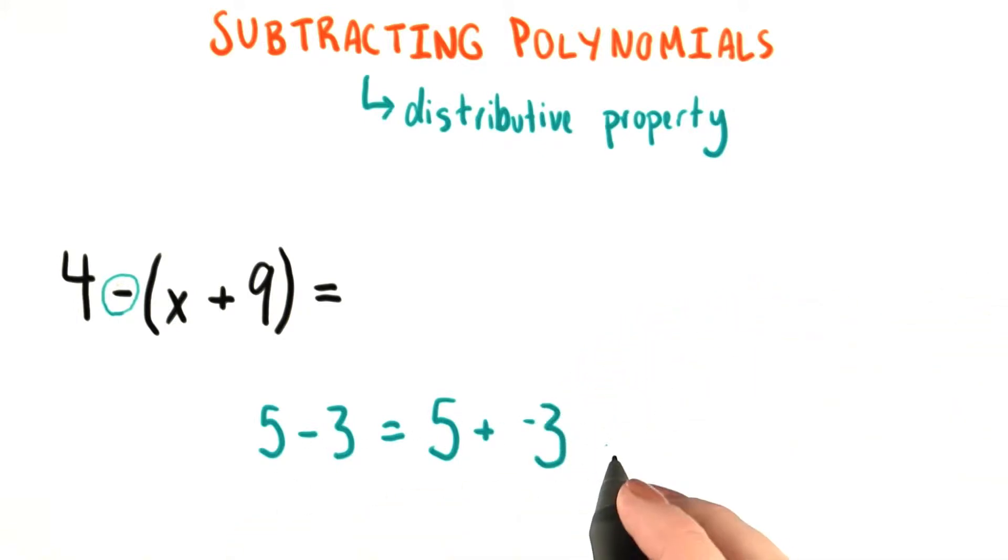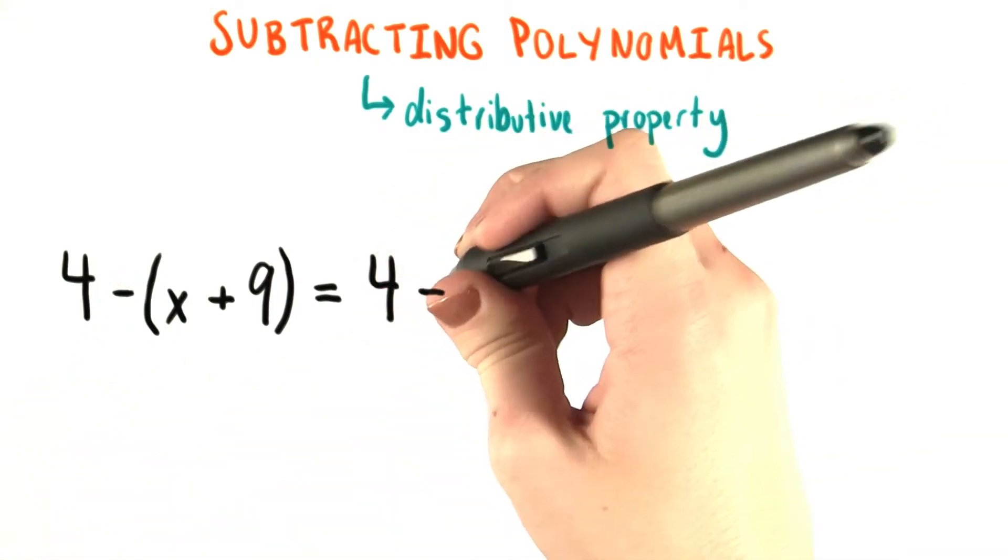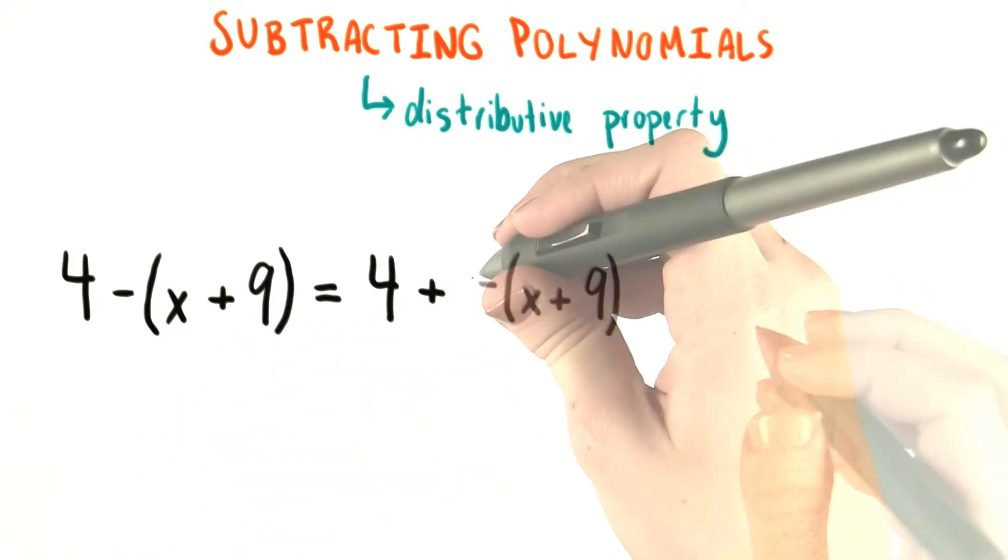Now that may seem like we're working backwards, but hang in there, this is going to be helpful. So let's do the same thing here. This is equal to 4 plus the negative of this entire quantity.